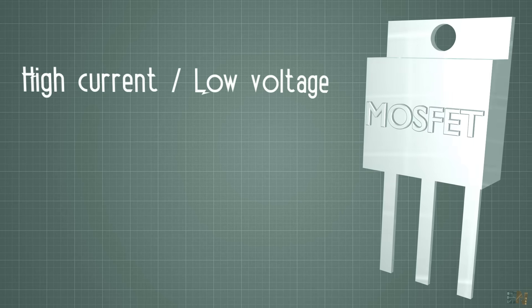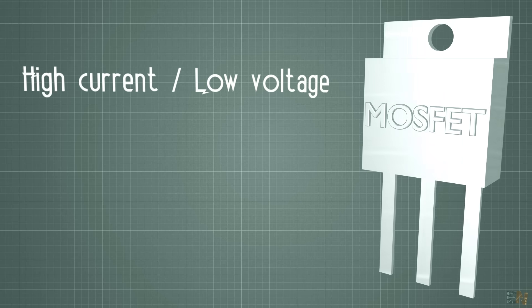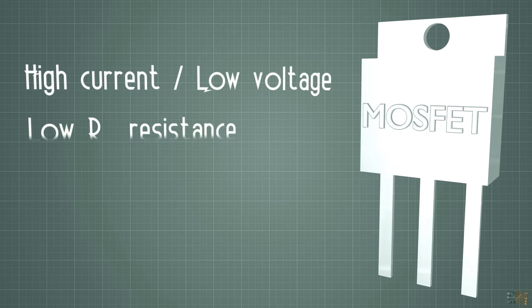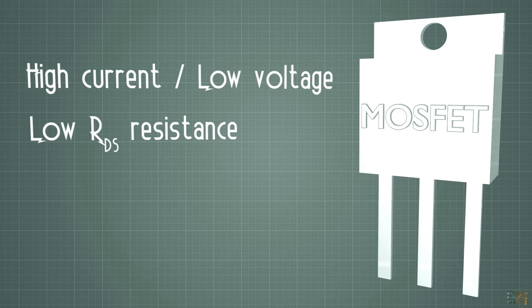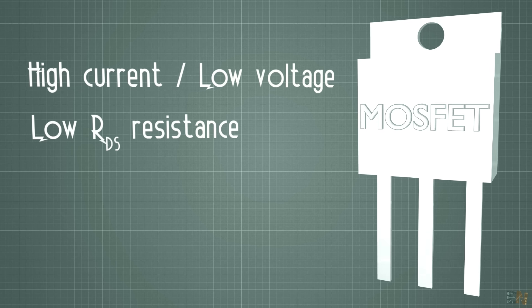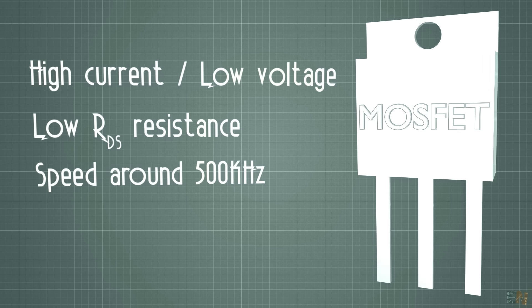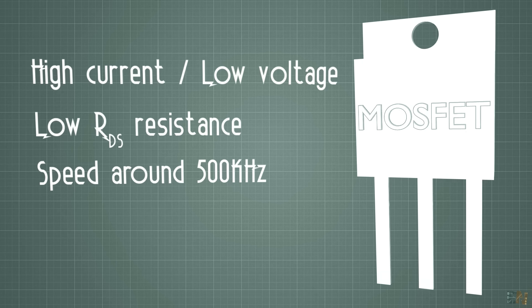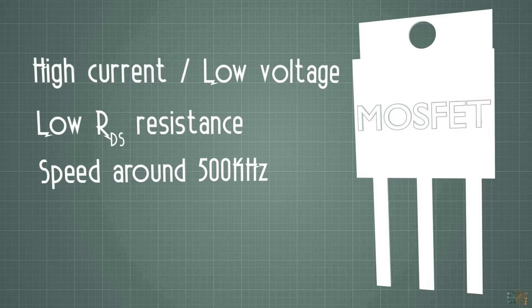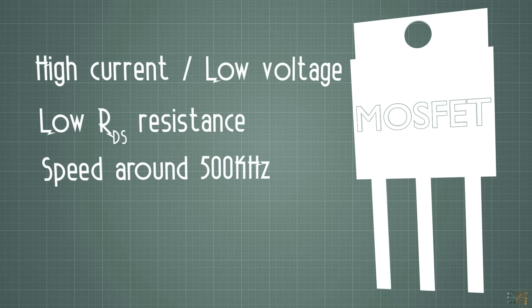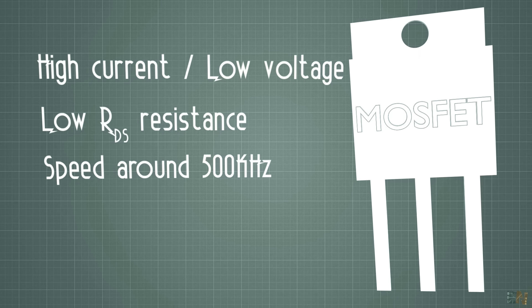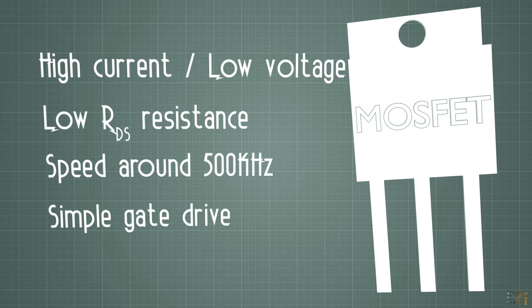For the MOSFET, we can say that it is a high current but low voltage device. The resistance between the drain and the source is low, so it could carry high currents. It could operate at high speeds, up to 500kHz. It could control high current loads, but for only maybe up to 100V.